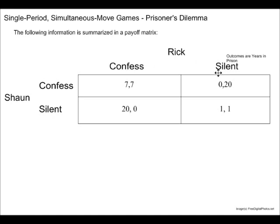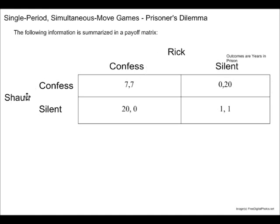Players, decisions, and outcomes — what's the result of those decisions? We have four different areas in this payoff matrix. The upper left corresponds to when Sean confesses and Rick confesses. The upper right corresponds to when Sean confesses but Rick chooses to remain silent. The lower left is the flip of that: Rick is choosing to confess whereas Sean is choosing to remain silent.